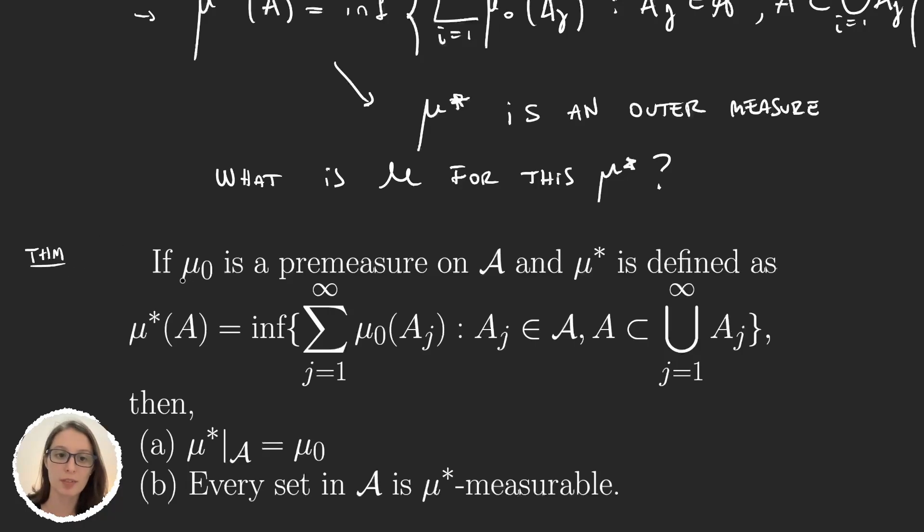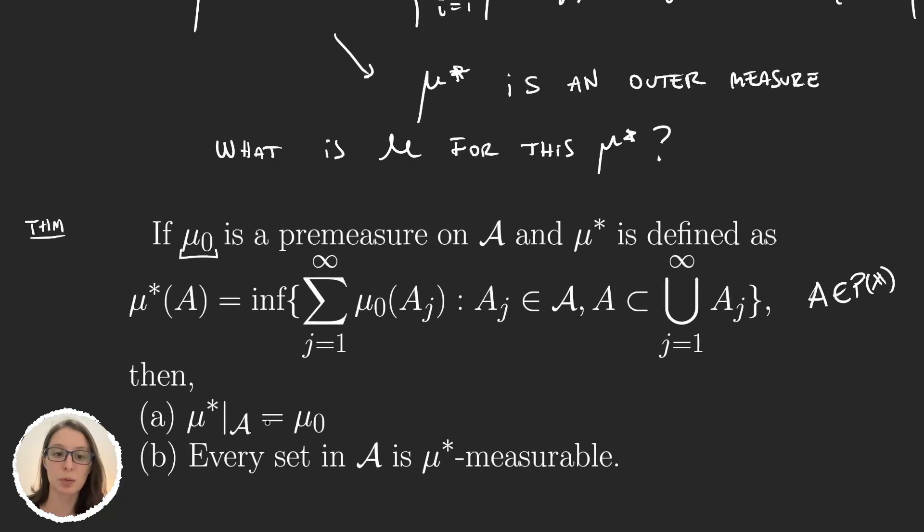It says we have a premeasure defined on some algebra A, and μ* defined like we saw. So for A as z in parts of X, we define its outer measure as the sum of the premeasures of the sets that cover the set A. But what's important about this way of defining the outer measure is that we have these two properties.